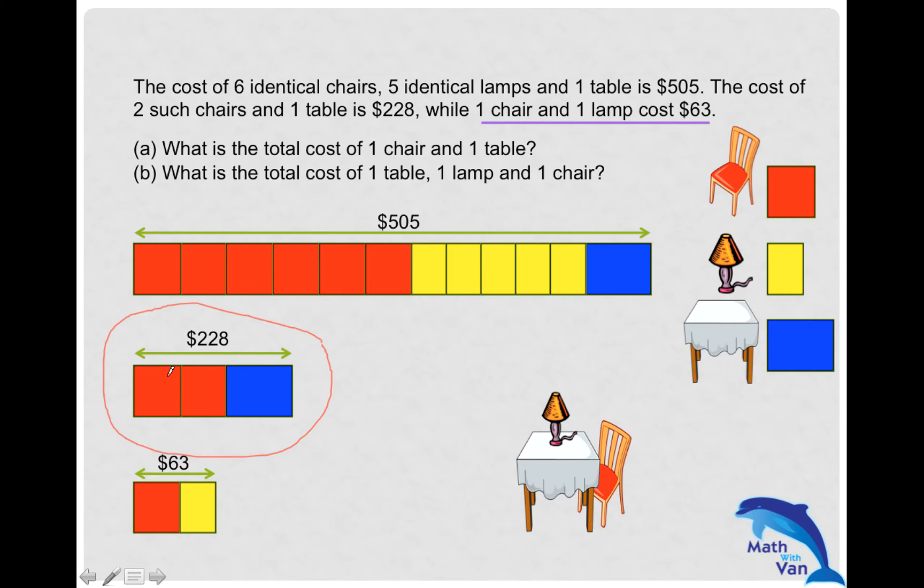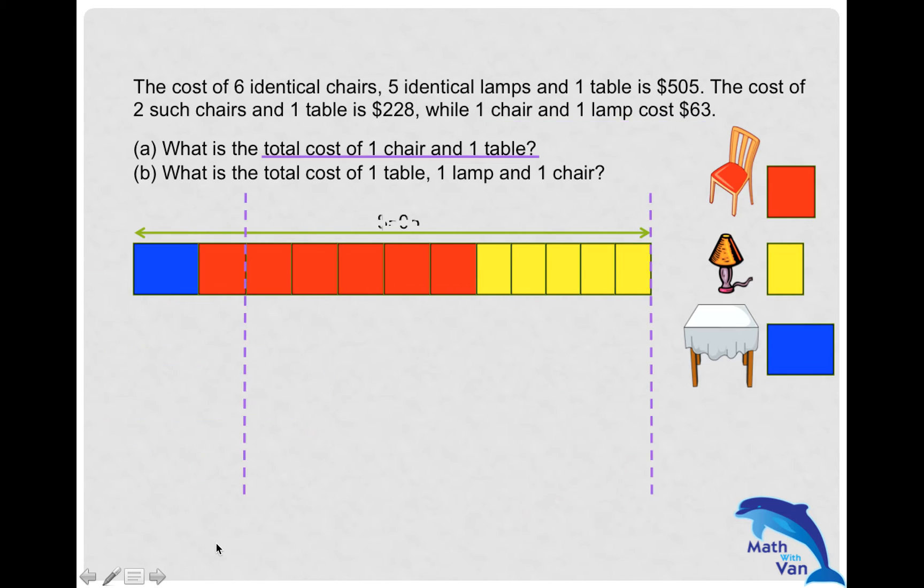Let's analyze this block of model here. Right now our purpose is to have one red and one blue, so I take away one red and one blue. I need to take away five chairs and five lamps. What's next? Is there another piece of information where I can have five chairs and five lamps?